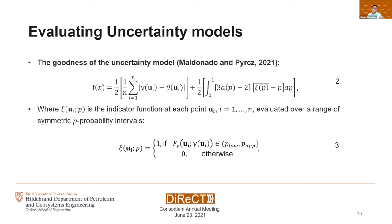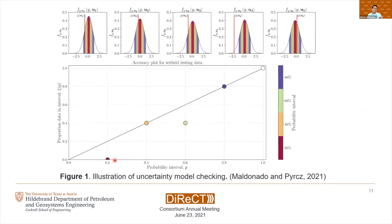The goodness of the uncertainty model is presented in equation two. In equation two, the first term is the typical mean absolute error in testing, and the second term is a measure of goodness. Xi here is an indicator function that is measured at each point evaluated over a range of symmetric probability intervals. Now, what can go wrong with our uncertainty model? We can have too low uncertainty — that is, too many truth values are outside of our confidence intervals — or we can have too high uncertainty. To illustrate the process of model checking with the goodness metric, we first withheld testing data. In this case, we have five testing data values from which we estimate the uncertainty distributions at the testing data locations.